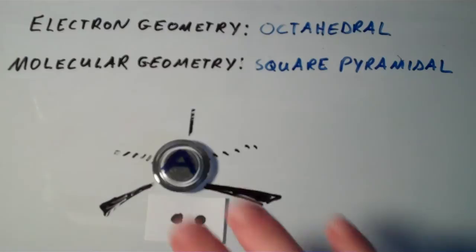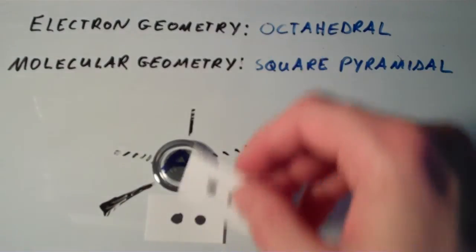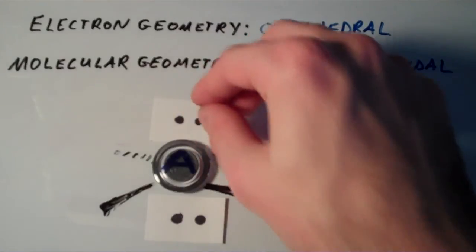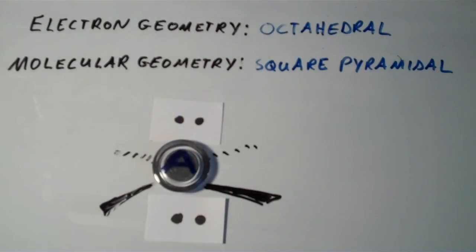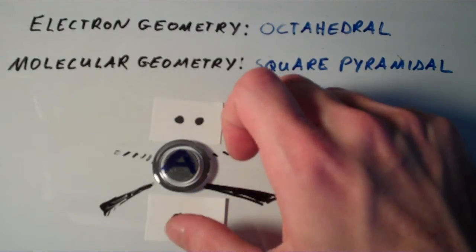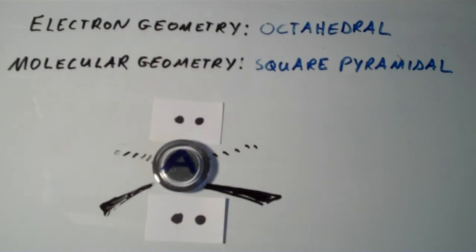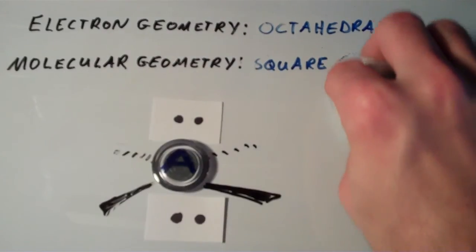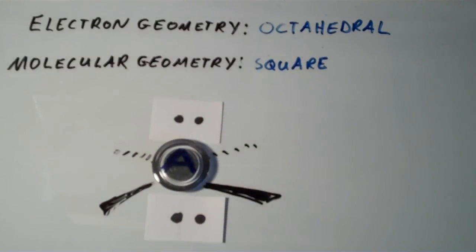If we have two lone pairs and an octahedral electron geometry, that second lone pair is actually going to go on opposite to where the first one did. And this is just also another way to relieve the lone pair bonding pair repulsions or any possible lone pair lone pair repulsions, which would be even worse. This shape in which we have six electron groups and two lone pairs is called square planar.